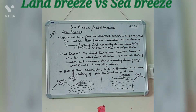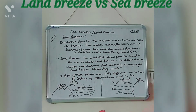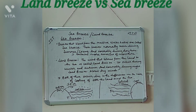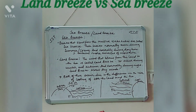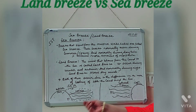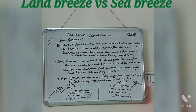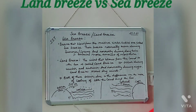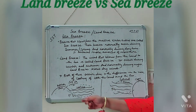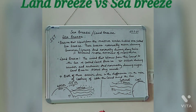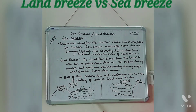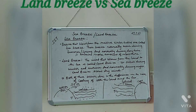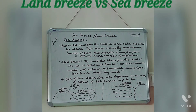Now, regarding cyclones: during summer, the land gets heated up very fast, warm air rises up at high speed, and a very strong low pressure area develops rapidly. This attracts air from the sea towards the land at very high speed. When this high-speed wind blows from the sea towards the land during summer, carrying a huge amount of moisture at very high speed, we call it a cyclone.